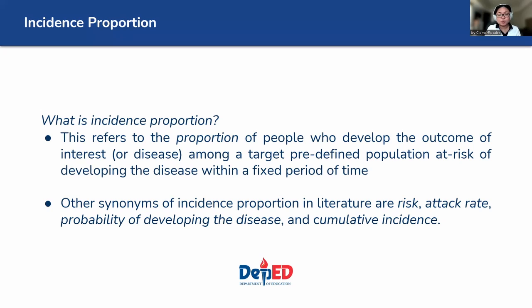What is incidence proportion? Proportion is a fraction — it has a numerator and denominator. It refers to the proportion of people who develop the outcome of interest or disease among a target predefined population at risk of developing the disease within a fixed period of time. Other synonyms of incidence proportion in the literature are: risk, attack rate, probability of developing the disease, and cumulative incidence. Those are the synonyms you will encounter across the news and in textbooks.